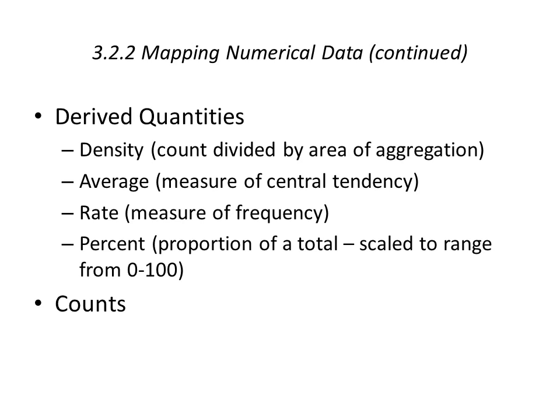There are a couple of different ways we can look at quantities: either they are derived or they're pure counts. A derived quantity would include density — a count divided by an area of aggregation — population as number of people per square kilometer, average as a measure of central tendency, a rate as a measure of frequency, and then a percent, like a proportion of the total where we range the scale from 0% to 100%.